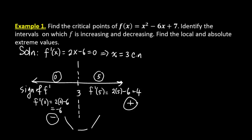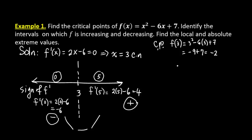To graph this, we plug x = 3 into the original function to get the critical point. f(3) = 3² - 6(3) + 7 = 9 - 18 + 7 = -2. So we have a parabola that opens upward with vertex at (3, -2).